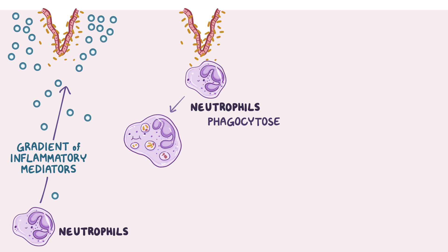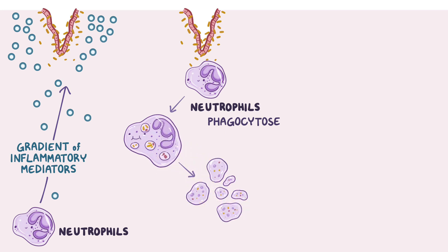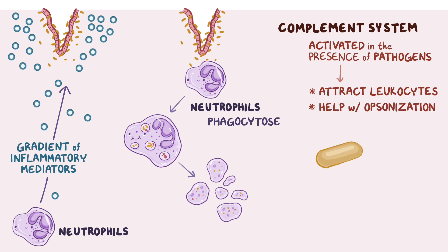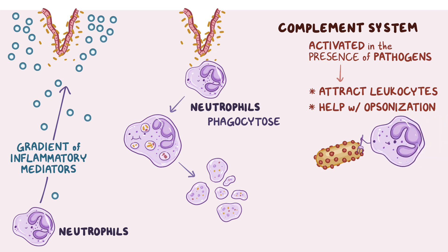Neutrophils take in a lot of pathogens quickly, kind of like a vacuum, and then undergo apoptosis, destroying themselves and all the pathogens they've taken in. There is also a family of soluble proteins called the complement system. Complement proteins most often get activated in the presence of antibodies bound to pathogens, or by molecules on the pathogens themselves. Once active, they help attract leukocytes and assist with opsonization — binding to microbes so leukocytes can more easily phagocytose them, like sticking a fork in a meatball so it doesn't slip away. Some complement proteins also kill pathogens by directly forming a channel in their membrane, literally punching a hole in it.